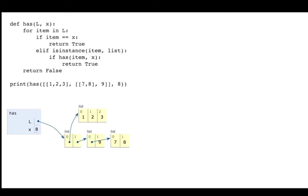A list might contain other lists which might contain other lists which finally contain some values. I have a has() function here — it takes a list and returns whether that x is somewhere in the nested structure. Here I have this nested list and I want to see if 8 is anywhere in there, and indeed it is.